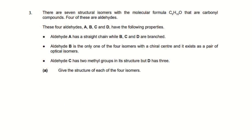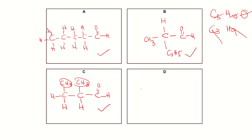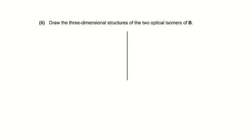Aldehyde D has three methyl groups. Drawing the aldehyde group first, then attaching three CH3 groups to the adjacent carbon. Counting: 1, 2, 3, 4, 5 carbons — done. Nine plus one gives 10 hydrogens, and one oxygen — yes, that matches. That is isomer D. You must fulfill all the properties given.